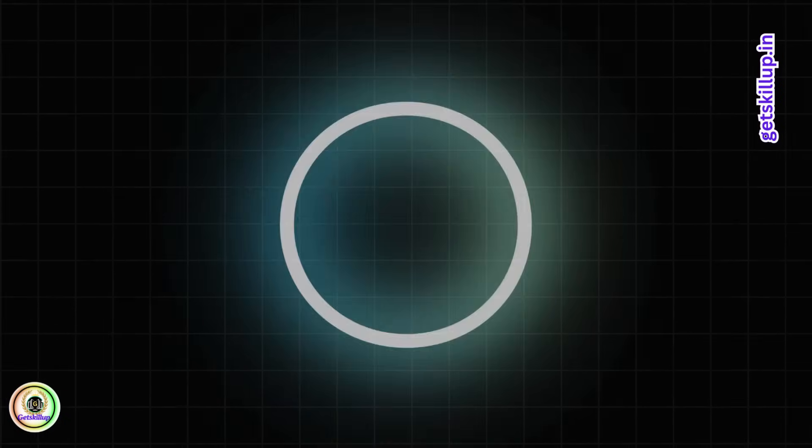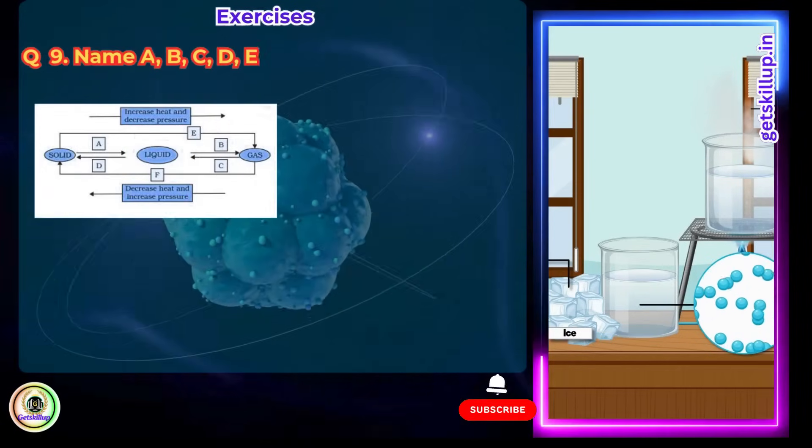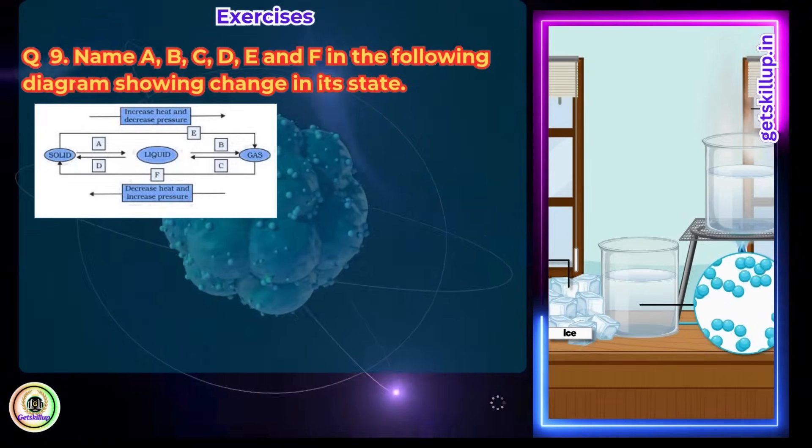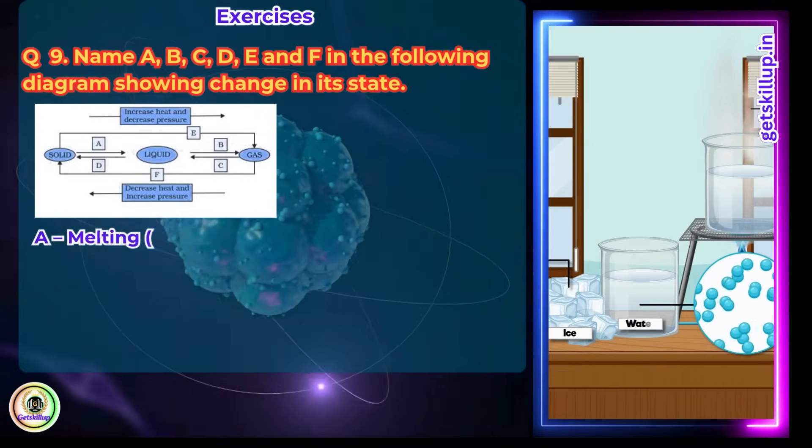Question 9: Name A, B, C, D, E, and F in the following diagram showing change in its state. Answer: A. Melting, solid to liquid. B. Vaporization, liquid to gas.